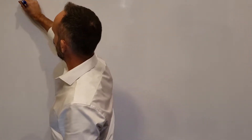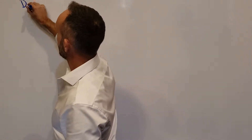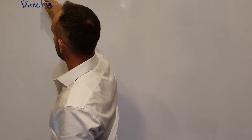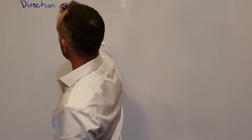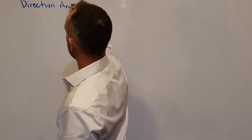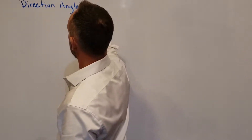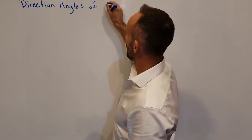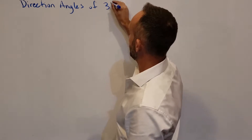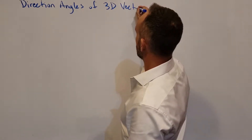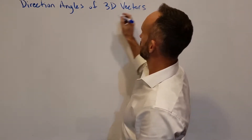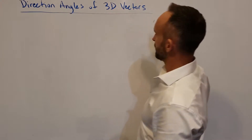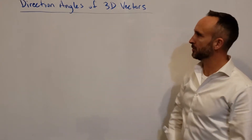We're going to be looking at direction angles, and these only apply to 3D vectors. Because in two dimensions we can just use the direction of the vector — very simple.